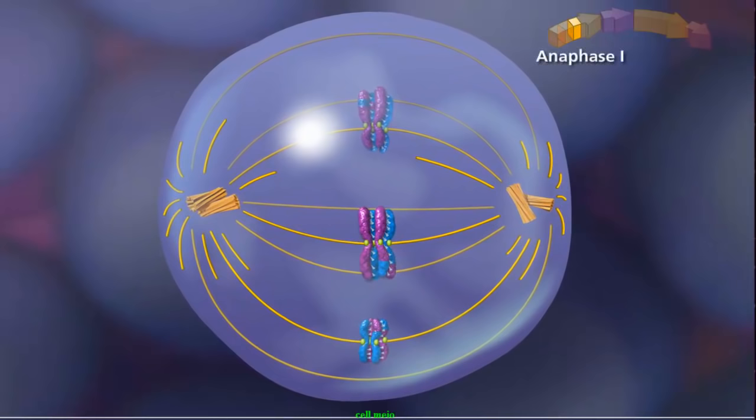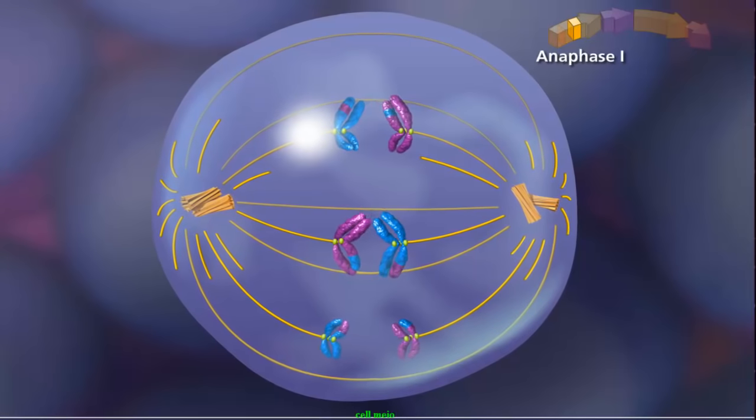In anaphase I, the homologous chromosomes separate and move toward opposite poles.